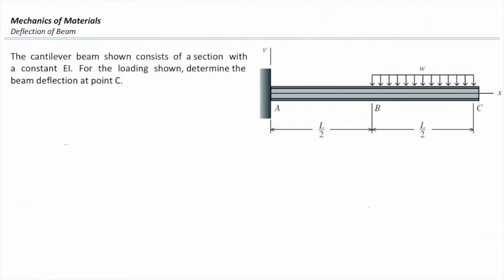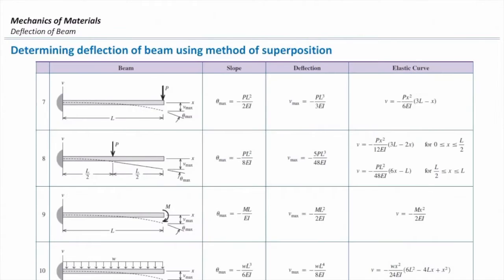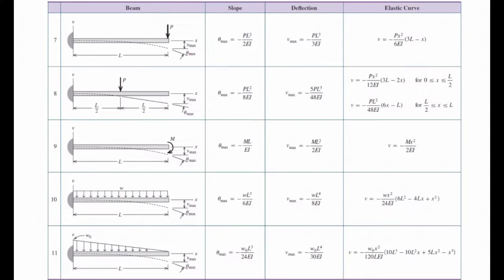Let me get back to the table, and you help me what can I use for solving this problem. Remember the loading, and now look at this table. Which one can I use for determining slope of that beam at that point, at the right end?